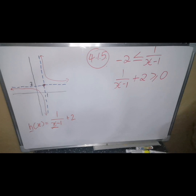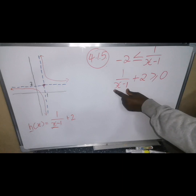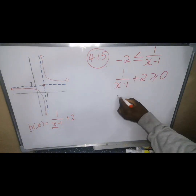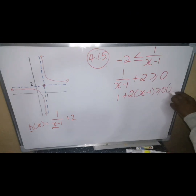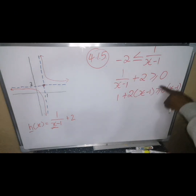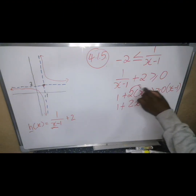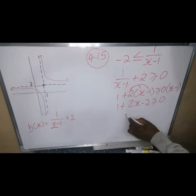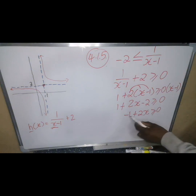Transposing negative 2 to the right: 1/(x − 1) + 2 ≥ 0. Finding the LCD, which is (x − 1), and multiplying throughout: 1 + 2(x − 1) ≥ 0. Expanding: 1 + 2x − 2 ≥ 0, giving 2x − 1 ≥ 0.